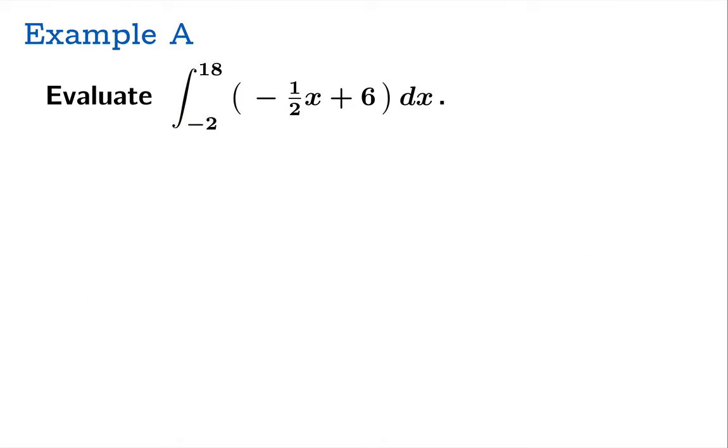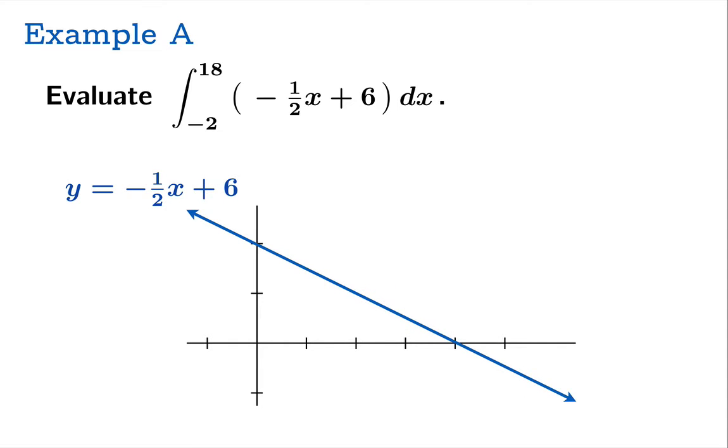Let's look at an example. Here's a linear function. We want to find the integral on the interval from negative 2 to 18. This has slope negative a half, and it's going to have a y-intercept of 6 and an x-intercept of 12, which you should verify. And if we plug in the arguments negative 2 and 18, we can find the corresponding y-coordinates.